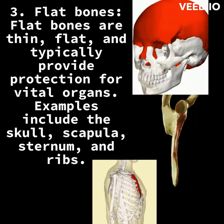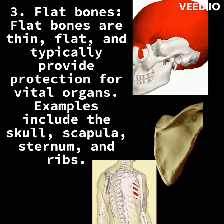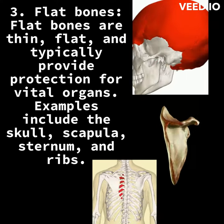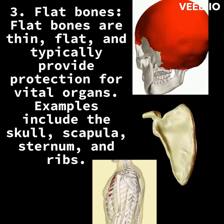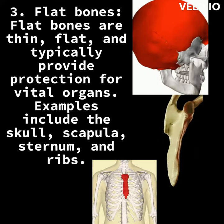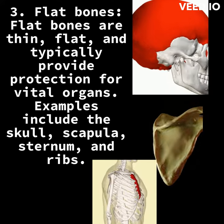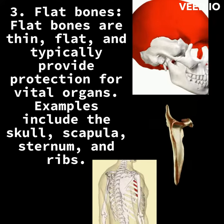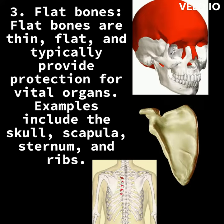3. Flat bones. Flat bones are thin, flat, and typically provide protection for vital organs. Examples include the skull, scapula, sternum, and ribs.